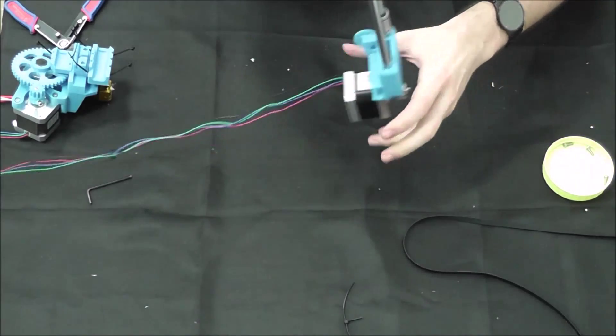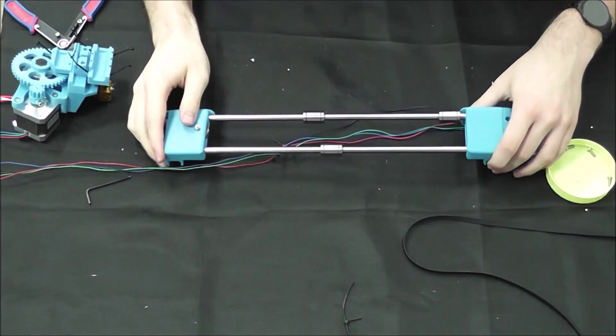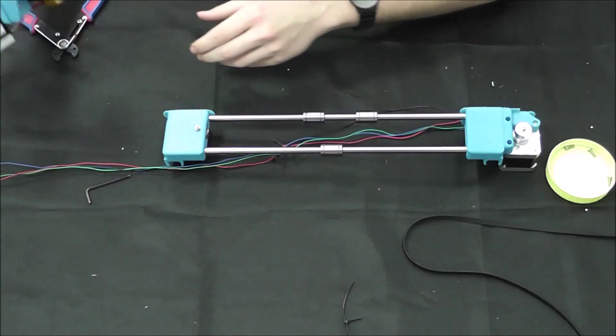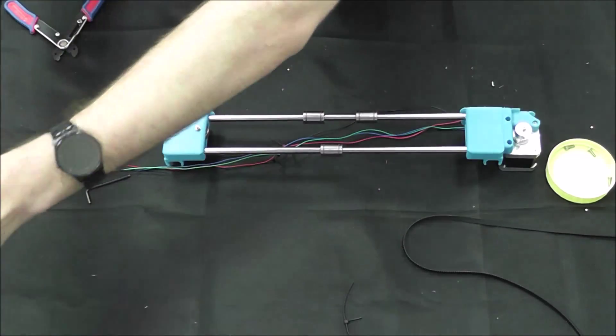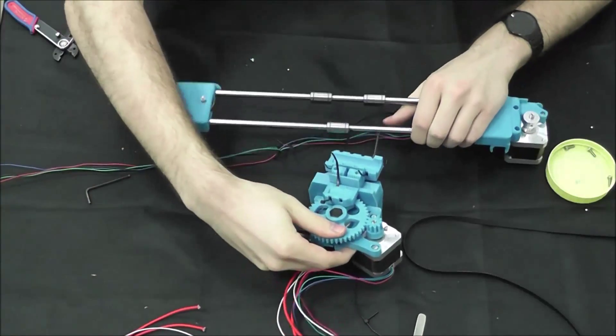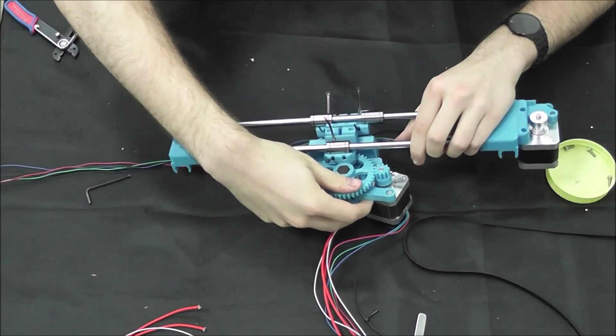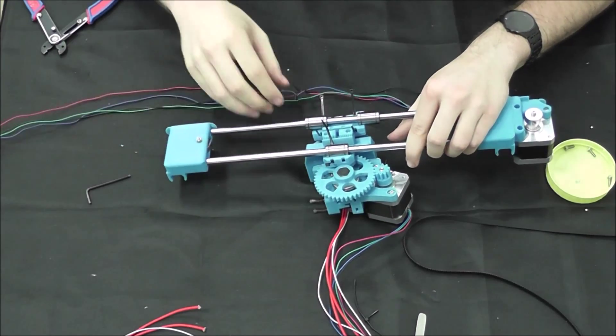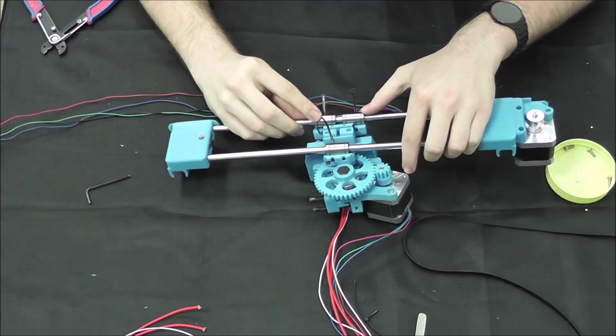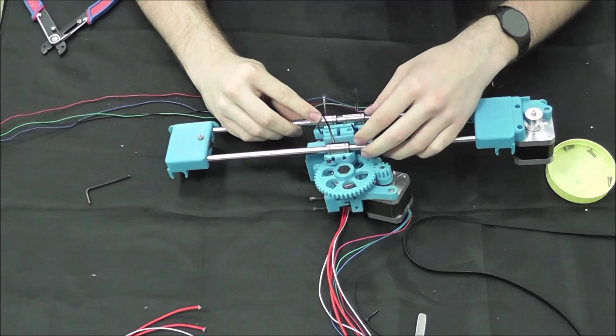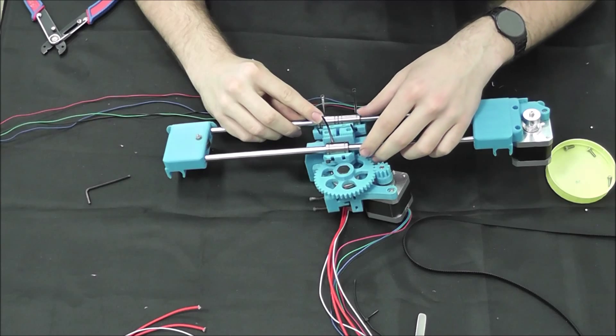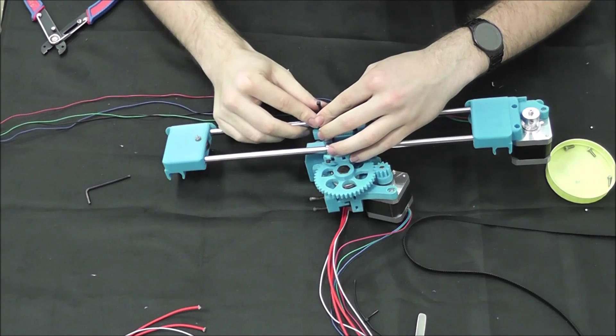We're going to flip it over so the flat end of both the x ends are facing us. We're going to slide the assembled extruder into the spot that we need it to be. We're going to go ahead and line up the bearings where they're supposed to go and secure them in there.